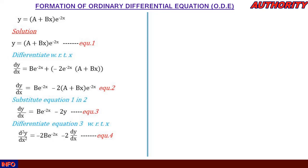Going back to equation three: dy/dx = be^(-2x) - 2y. Taking -2y to the left-hand side gives dy/dx + 2y = be^(-2x). Call this equation five.